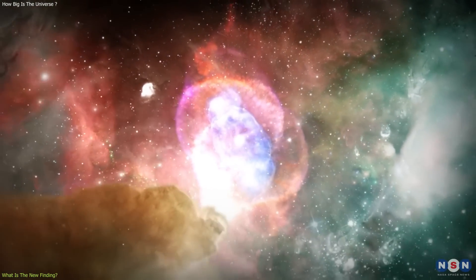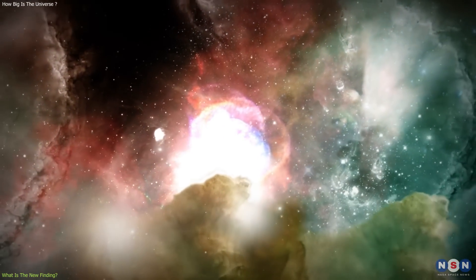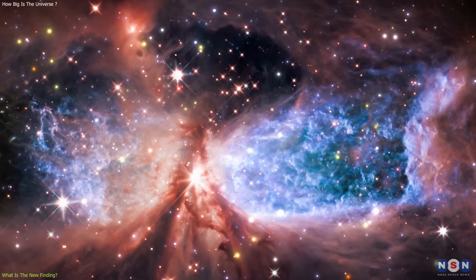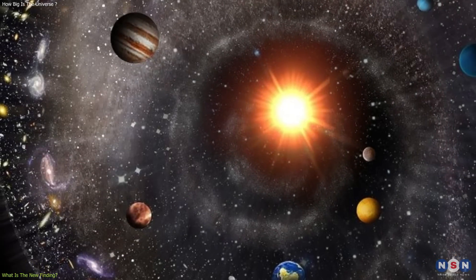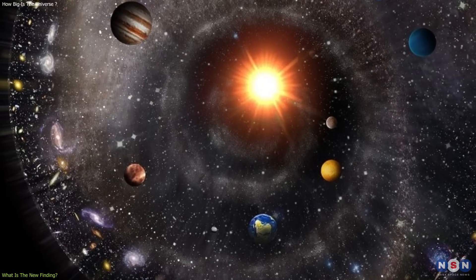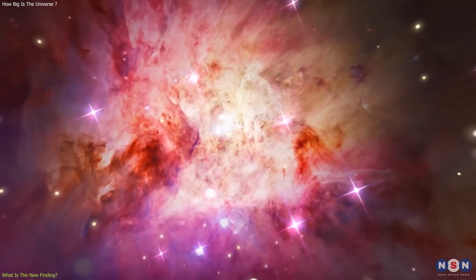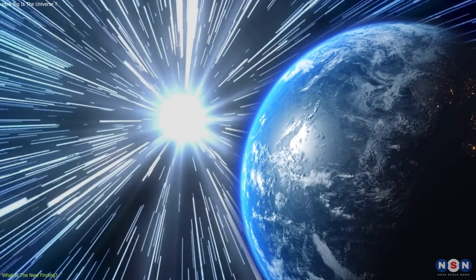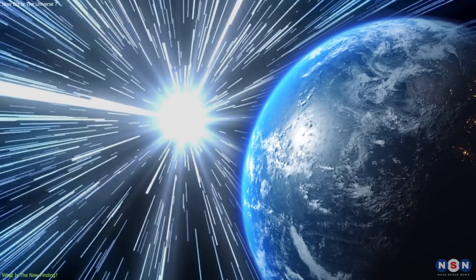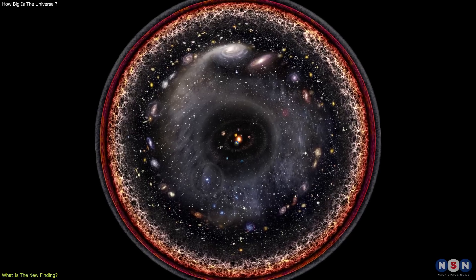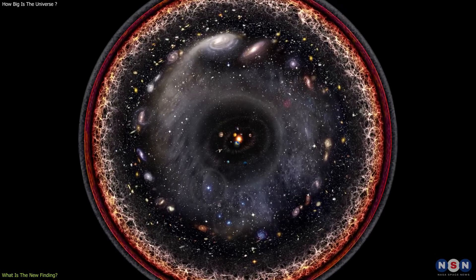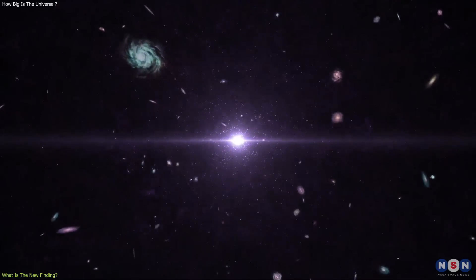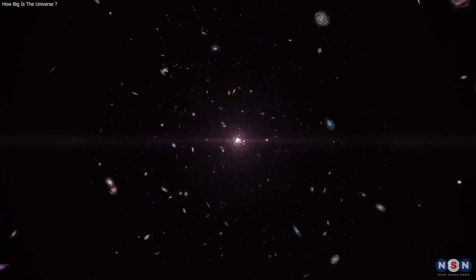On the other hand, it also means that there are some parts of the universe that we cannot see now, but we will be able to see in the future, because they will enter the particle horizon and become visible to us. This is because the light from these regions has not reached us yet, but it will in the future, as the particle horizon grows. So, the observable universe is not static, but dynamic, and it changes over time, depending on the age and the expansion of the universe.